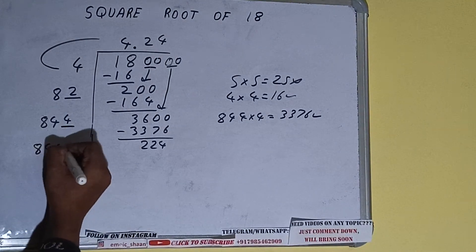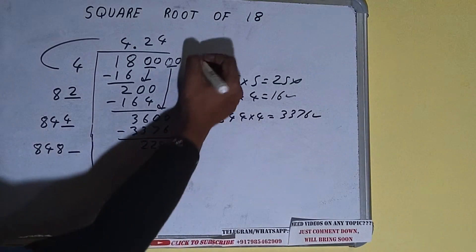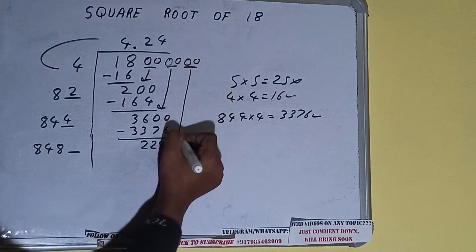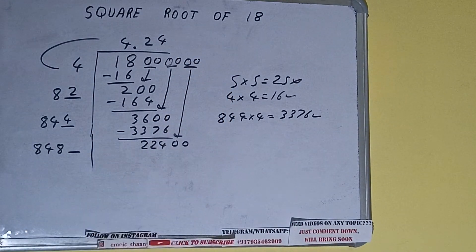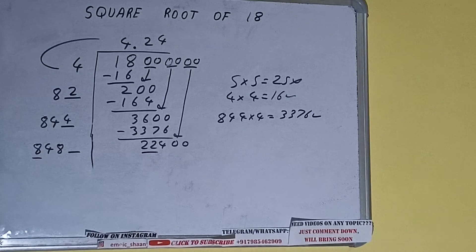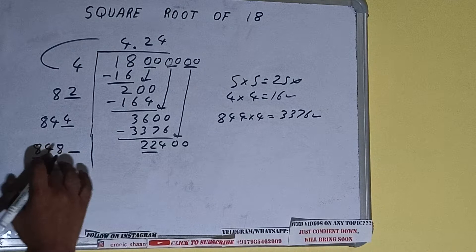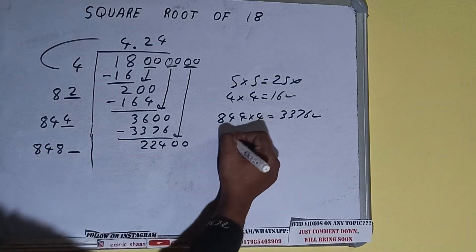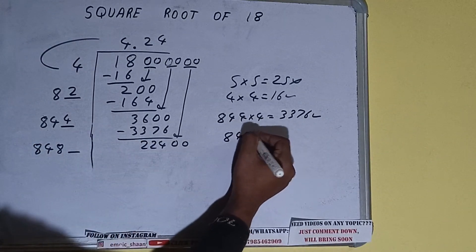This number we need to make it big, so bring the next pair of zeros down and it will be 22400. Now we can compare this 8 with this 22. So 8 two times is 16, right? So we can try 2 times.